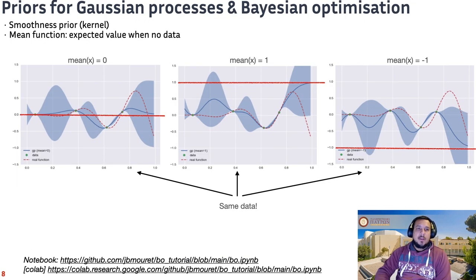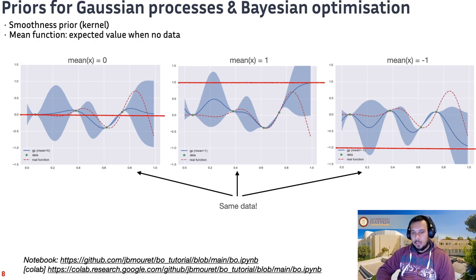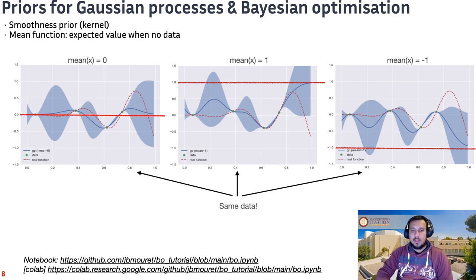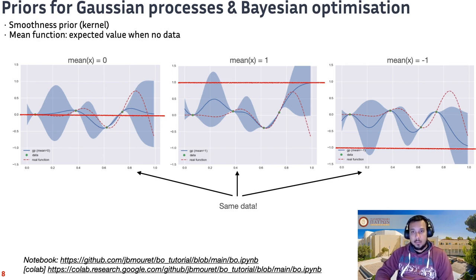The main issue with approaches like PILCO and Blackdrops is that they do not scale very well when the dimensions of the dynamical system are very high. This is because we need exponentially more data to actually capture the effects of the dynamics. As we said before, one of the best ways to learn more effectively in high-dimensional systems is to use more priors.